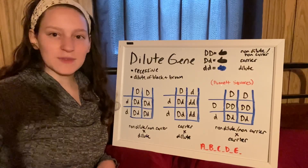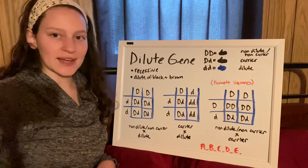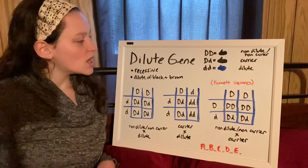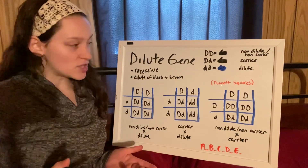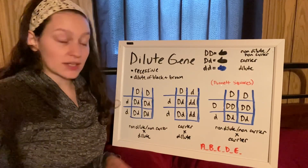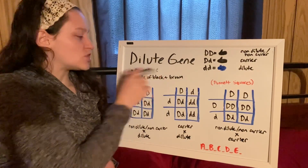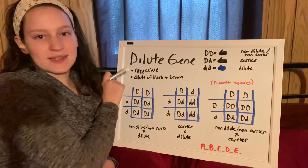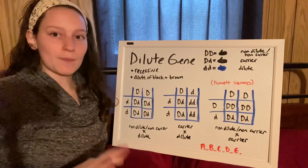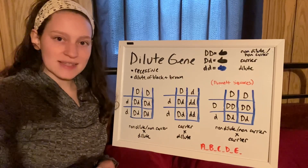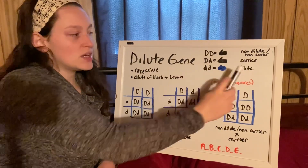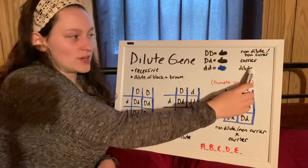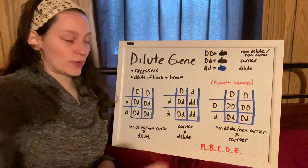Hi there, today I'm talking about the dilute gene. Unlike dominant genes such as broken, the dilute gene is recessive, which means it must be present in a double dose in order to create dilute.